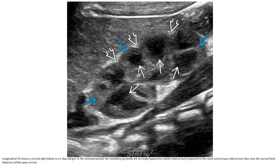This is a normal right kidney in a first-day-old girl. In the neonatal period, the medullary pyramids are normally isoechoic or hypoechoic compared to the renal cortex, representing the normal fetal appearance.